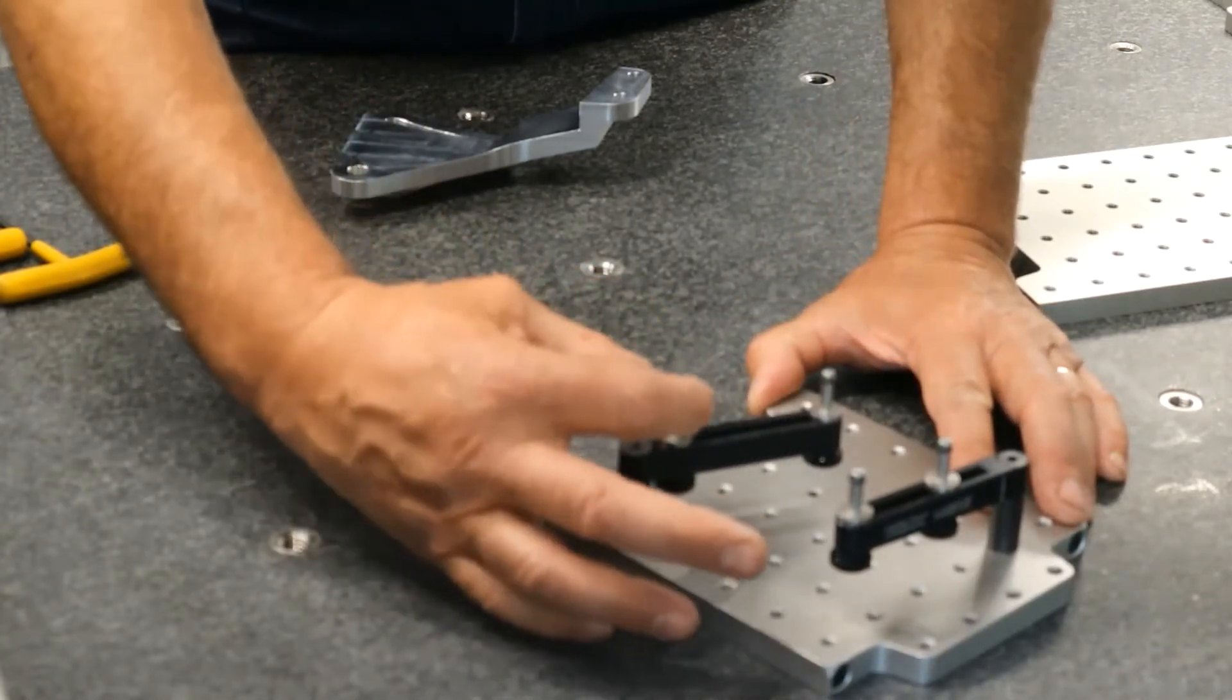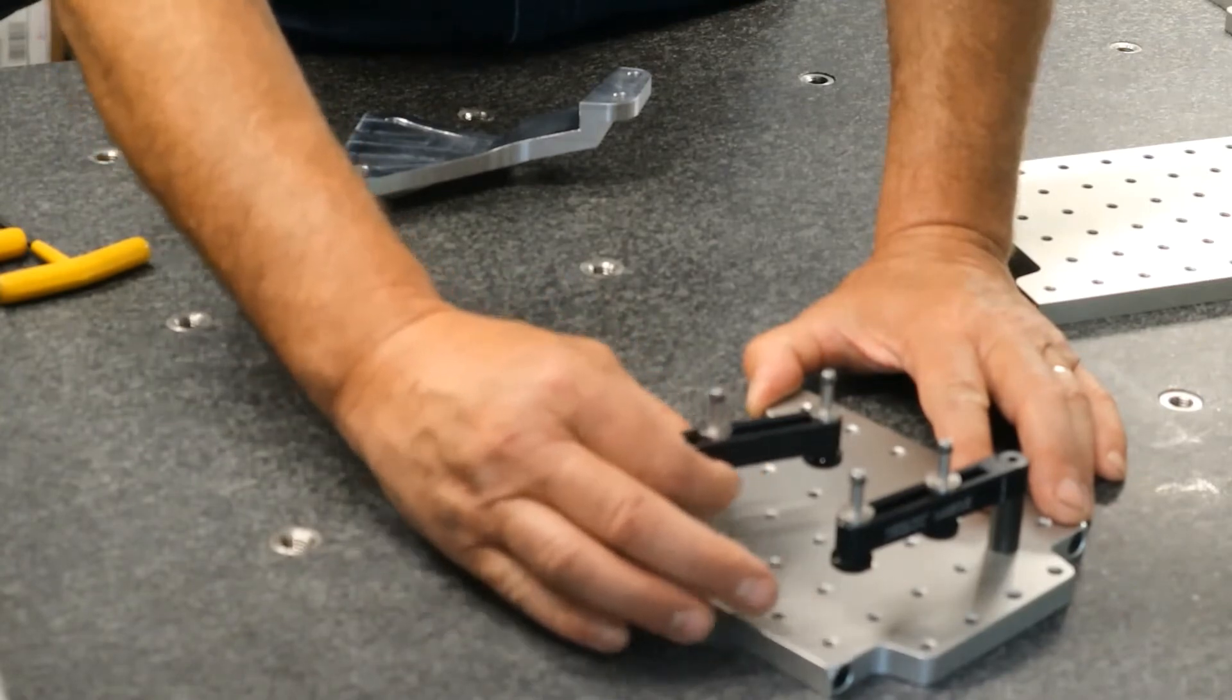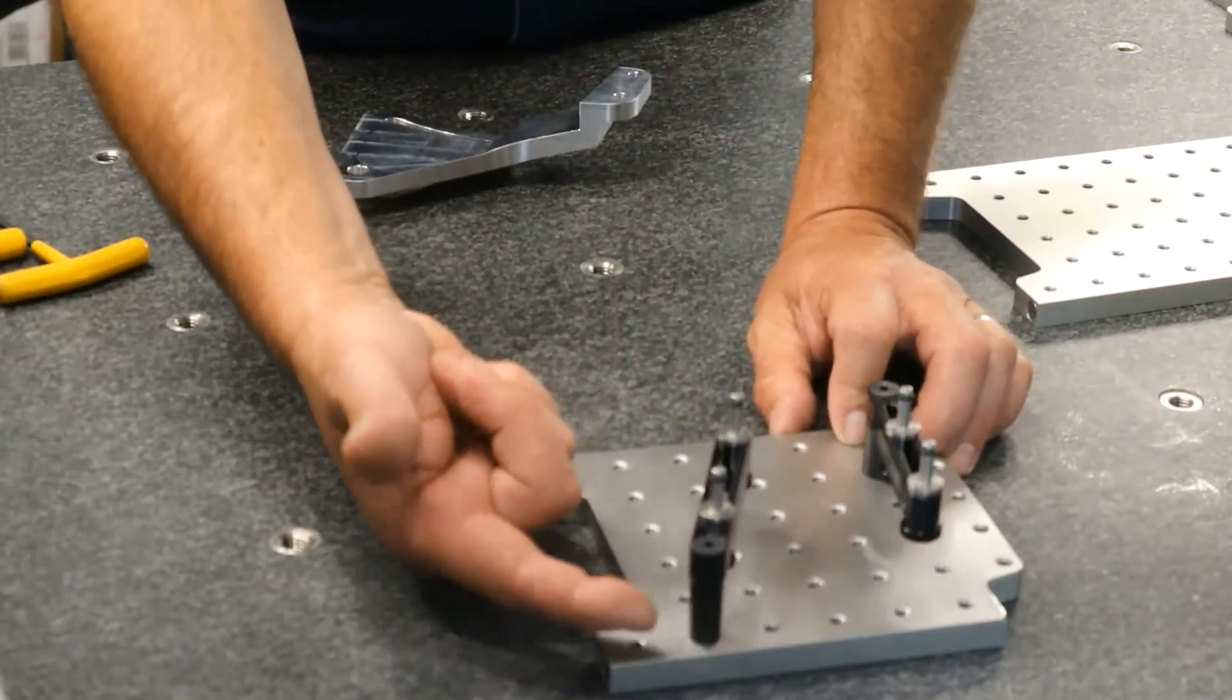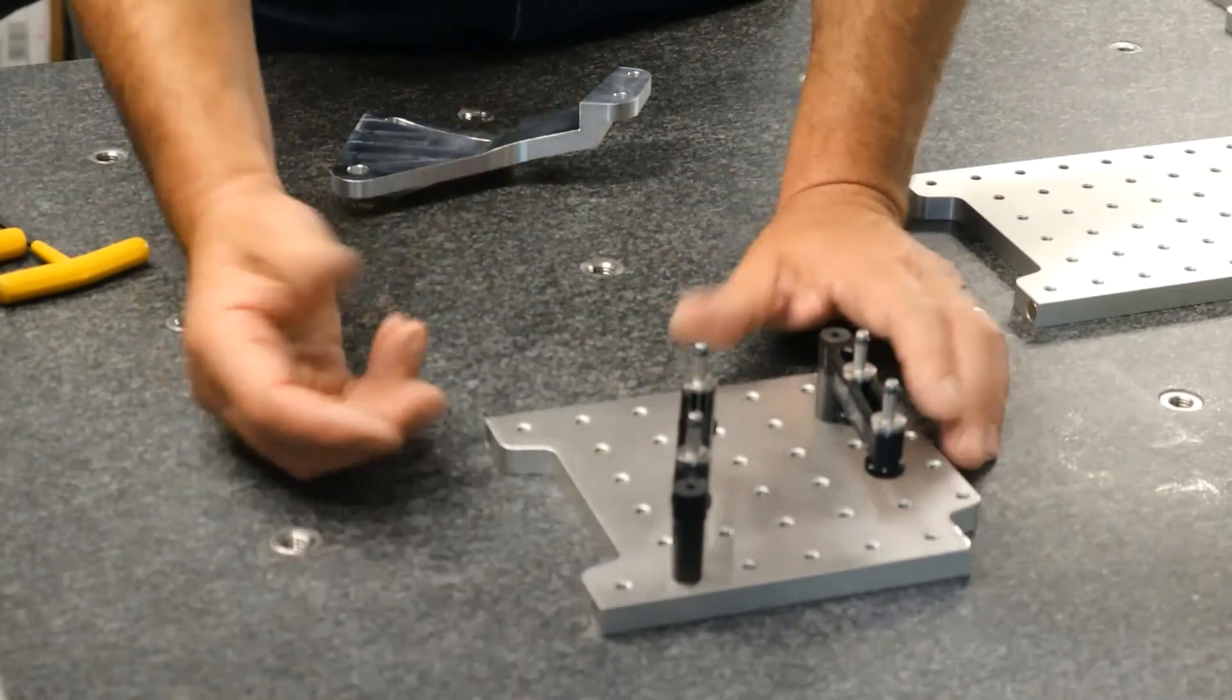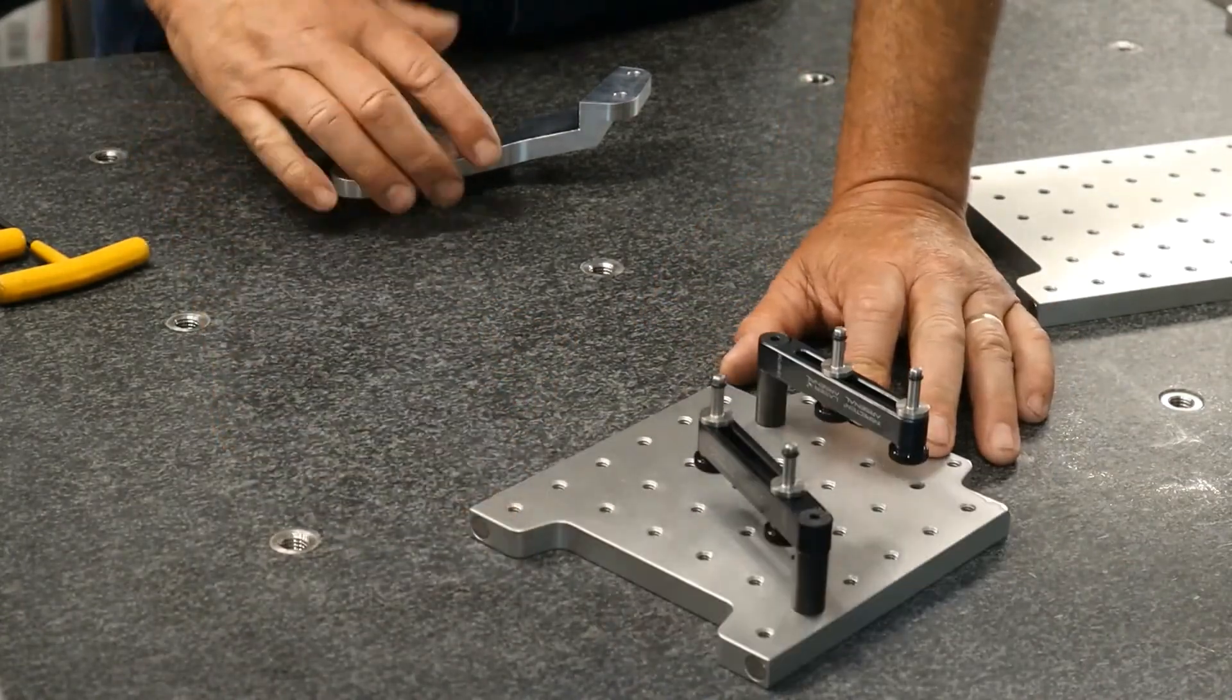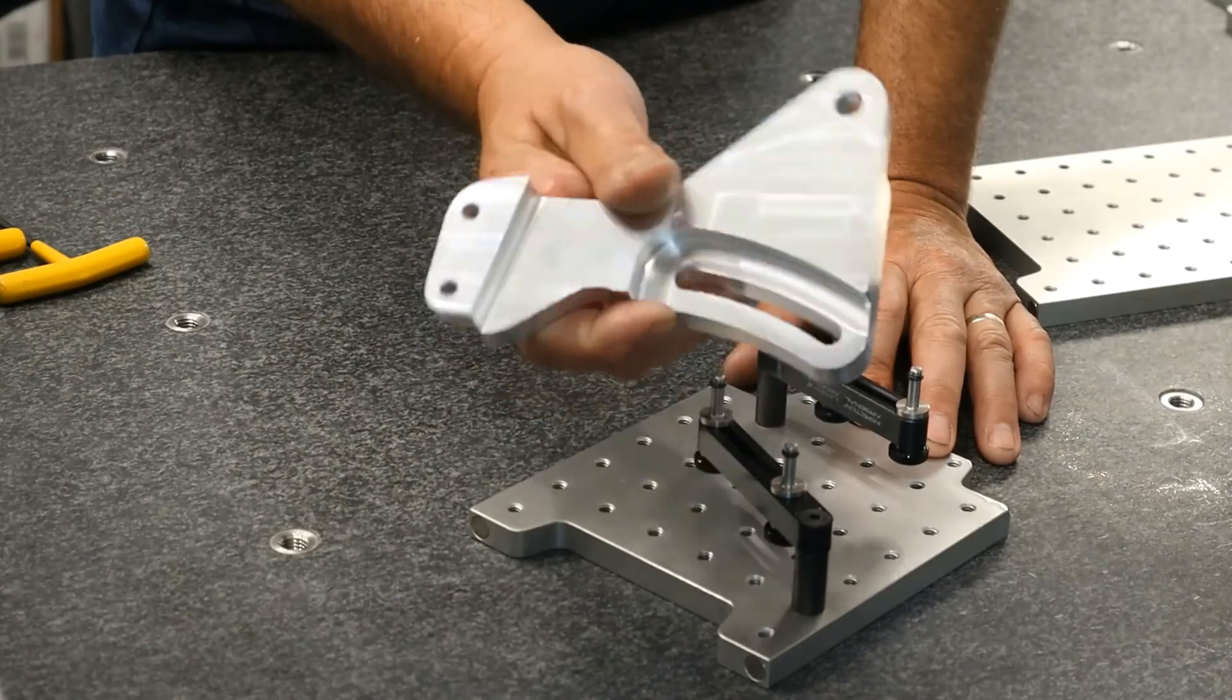These standoffs can be adjusted. They have little o-rings in here for gripping force, and these can be swung around 360 degrees. You can mount them on taller standoffs if need be. So these are very adjustable. They come in handy for kind of oddball, hard-to-hold parts like this.